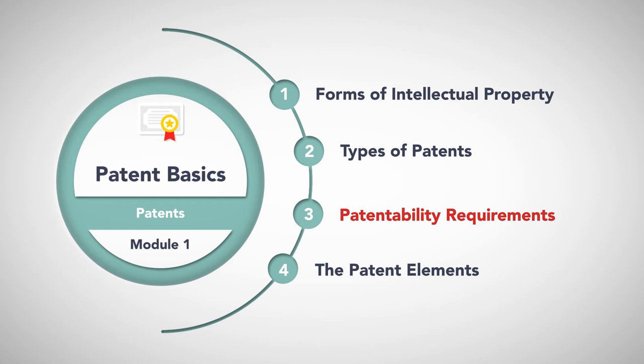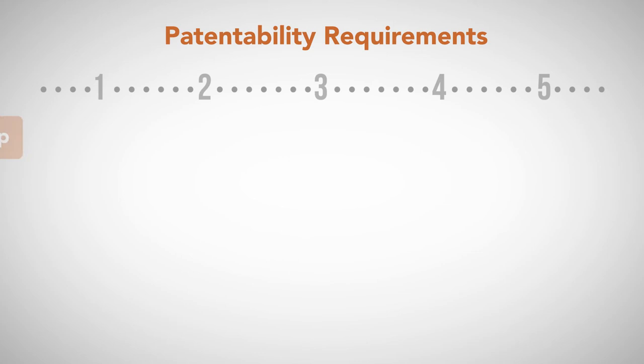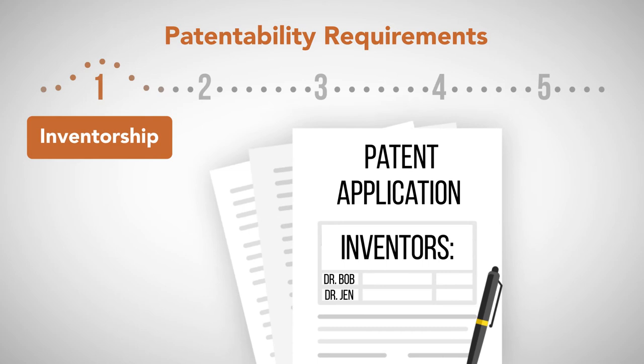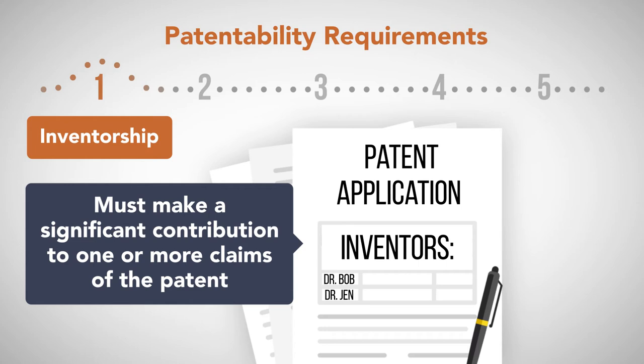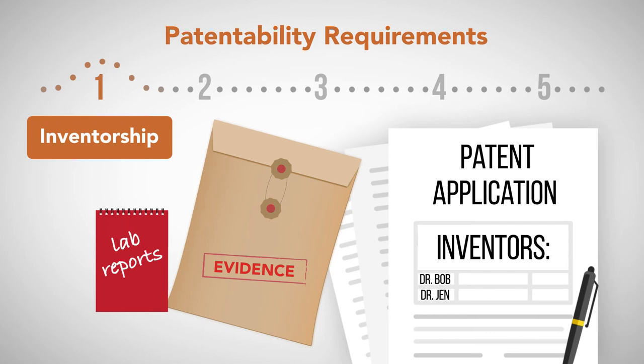Congress and the Patent Office have created a number of requirements for obtaining patent protection. The first is inventorship. Every patent application must list all of the inventors and only those inventors. Each listed inventor must make a significant contribution to one or more claims of the patent. The Patent Office typically requires corroborating evidence of inventorship, such as a detailed laboratory notebook or other documentation.